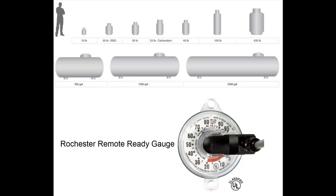The HouseLogix Wireless Propane Sensor works with Rochester remote-ready gauges that are commonly found on most propane tanks over 50 gallons. If the gauge that is currently installed is not remote-ready, chances are that it can be updated by calling the propane tank service provider.